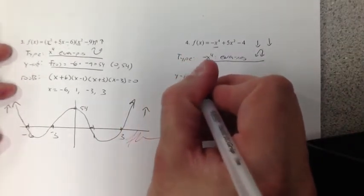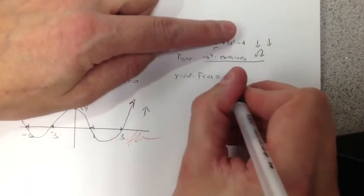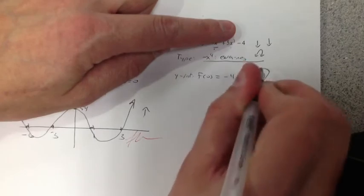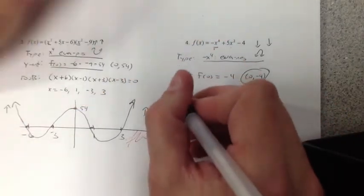Get the y-intercept. Let x be 0, 0, 0, negative 4. (0, -4). There's the point. People say, Mr. Warner, what's the point? 0, negative 4. That's what I tell them.